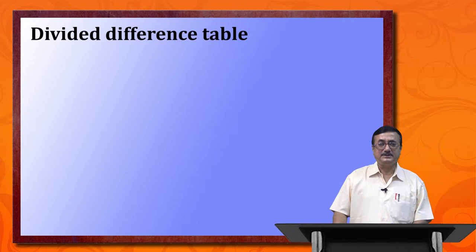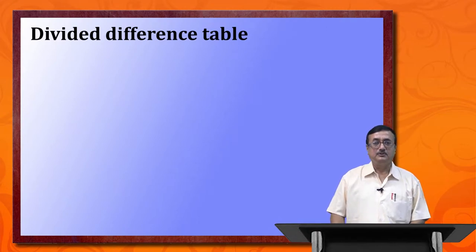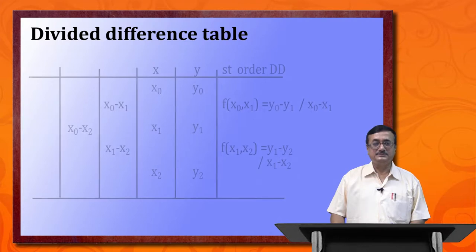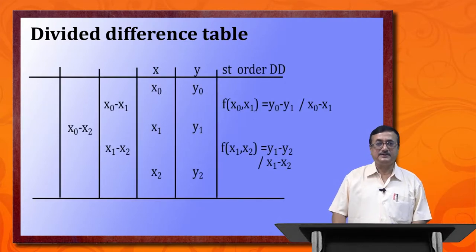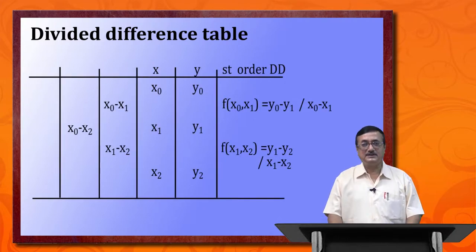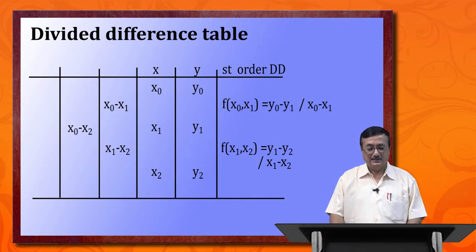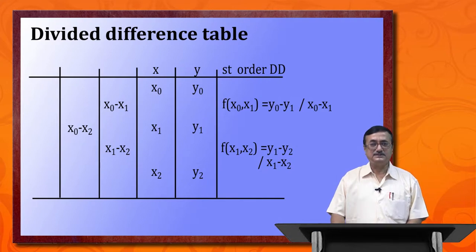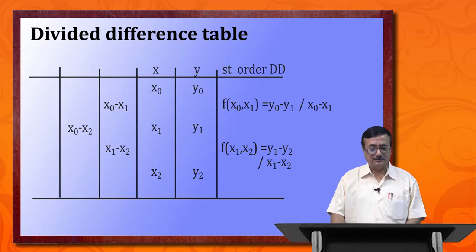To use Newton's divided difference formula, we have to find out the divided difference table. It is a little bit different from the difference table as seen earlier. We should have two components: one x component, and on the right hand side we write the y component. The divided differences are written using both components from the left hand column to the right hand column.